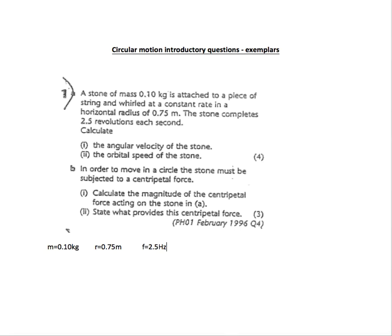So we know the mass, we know the radius, we know the frequency. And part one of our question wants us to determine the angular speed of the stone. So we need a relationship that connects the angular speed or angular velocity to what we know. And we know they are related by the frequency.